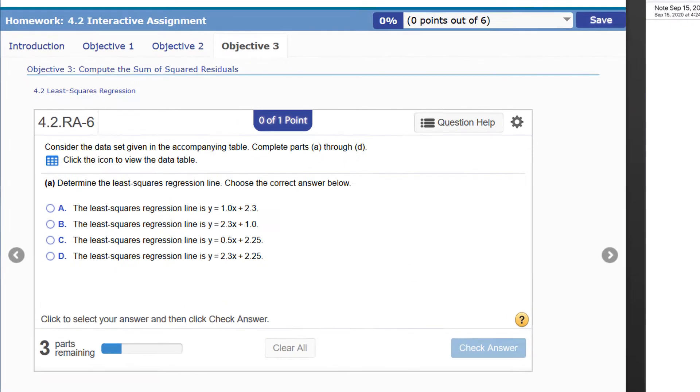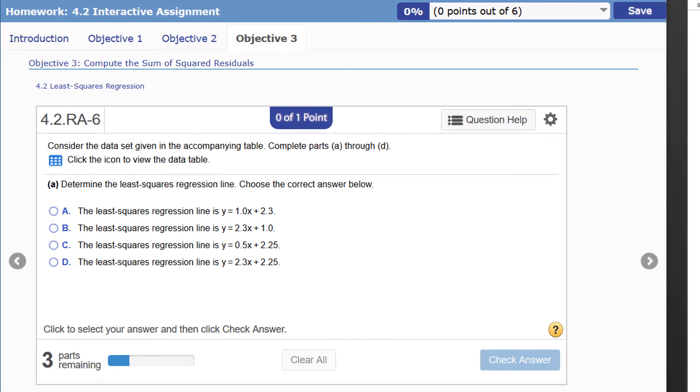Hi, in this video we're going to go over problem 4.2.RA-6. This problem has to do with the sum of squared residuals, and we're going to look at this for the line of least squares regression but also a different line that may fit the data. We'll show that the least squares regression line has a smaller sum of squared residuals than any other line that we pick. So first, I want to find the least squares regression line for the set of data that I have.